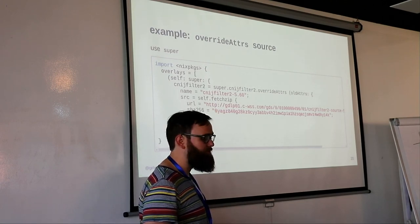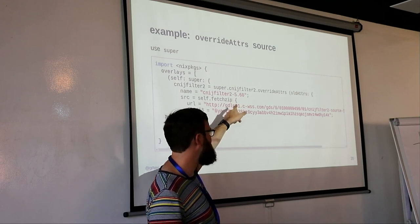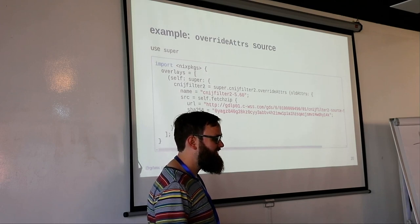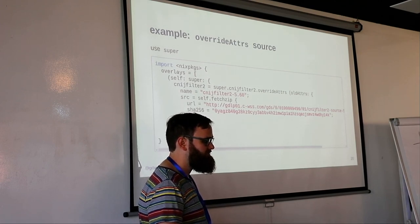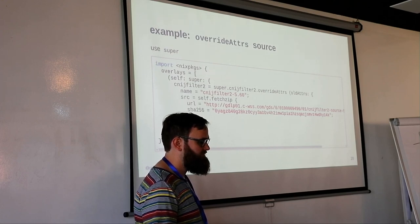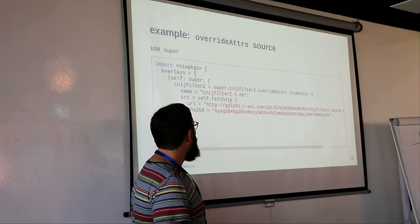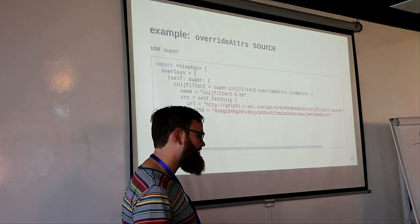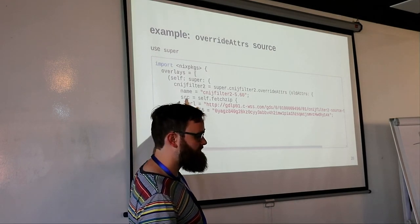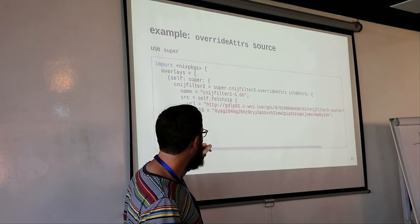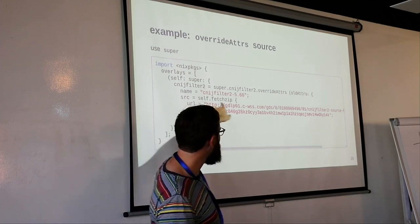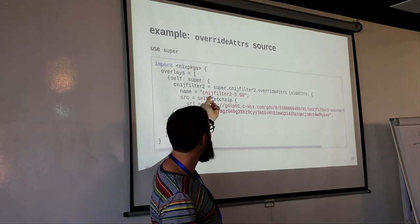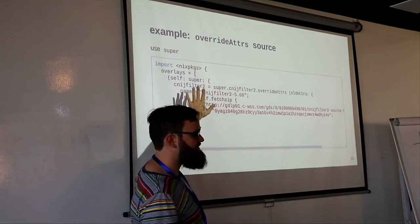It's courteous to keep the name correct in overlays. Nix doesn't really care about the name, but it's rude to have cnijfilter2-4 in the name but actually have version 5.60. Some tooling uses the name and some uses the attributes. For newer packages using pname instead of name, you could just do `version = "5.60"` and stdenv.mkDerivation would combine pname and version into the correct derivation name.